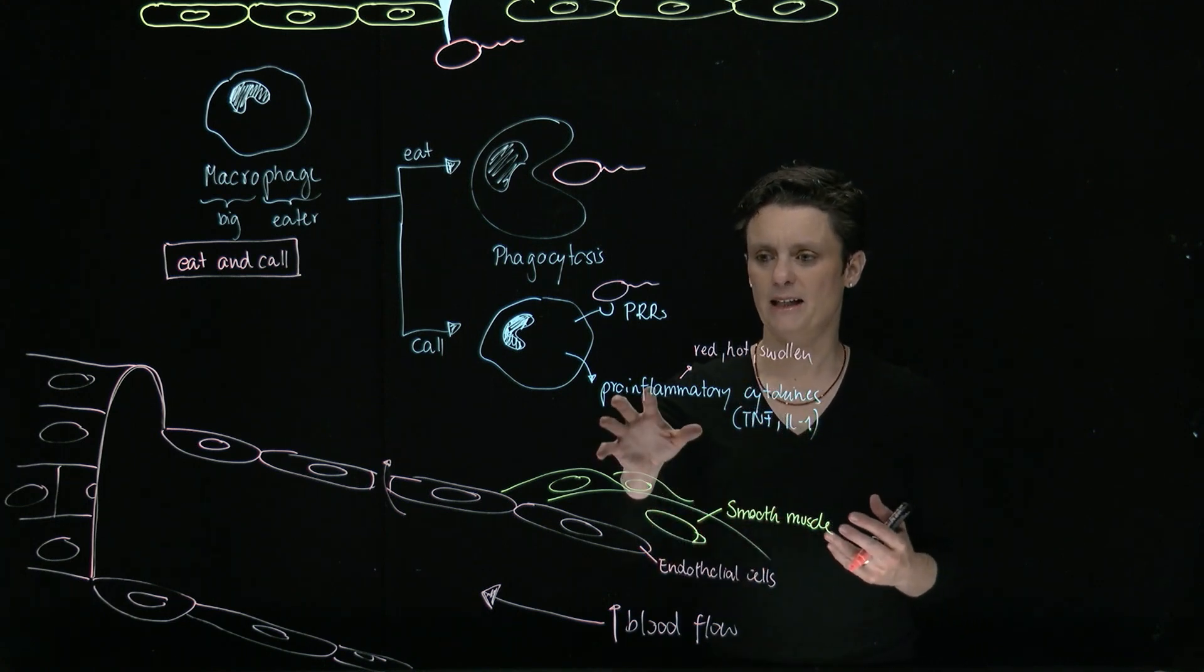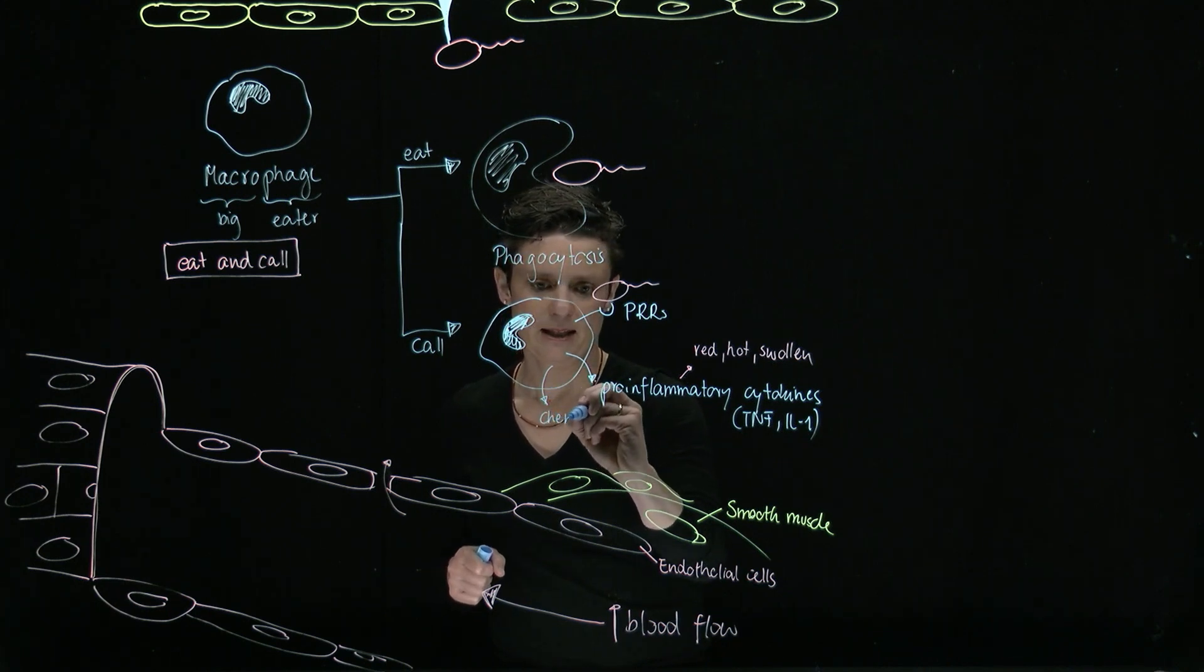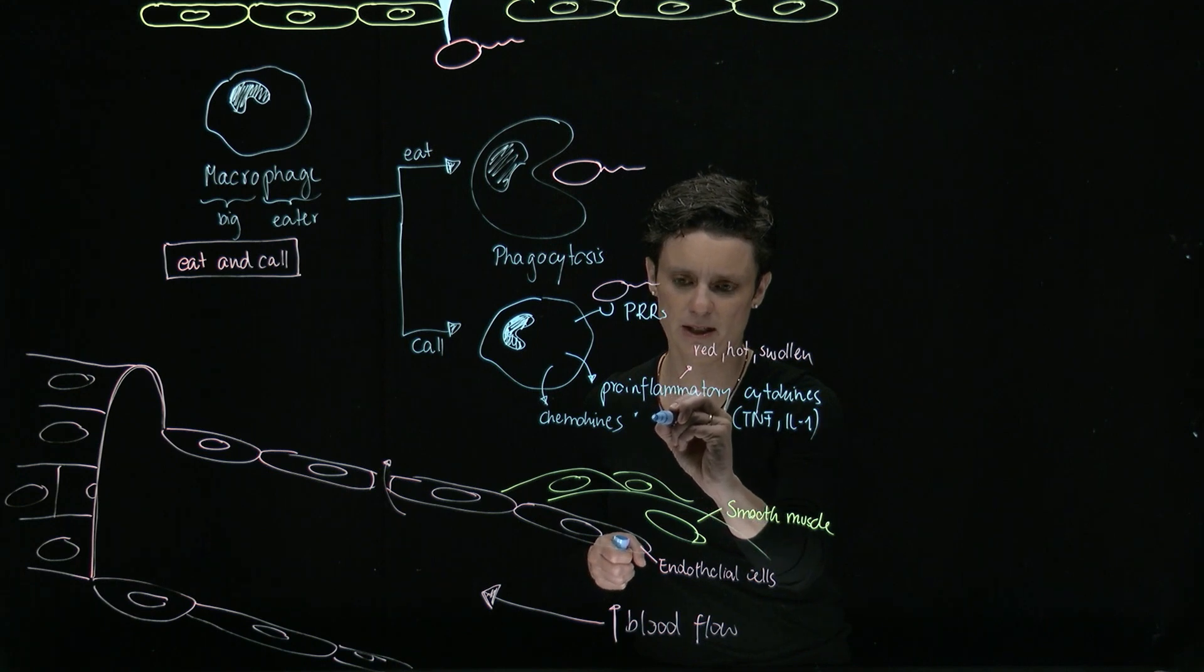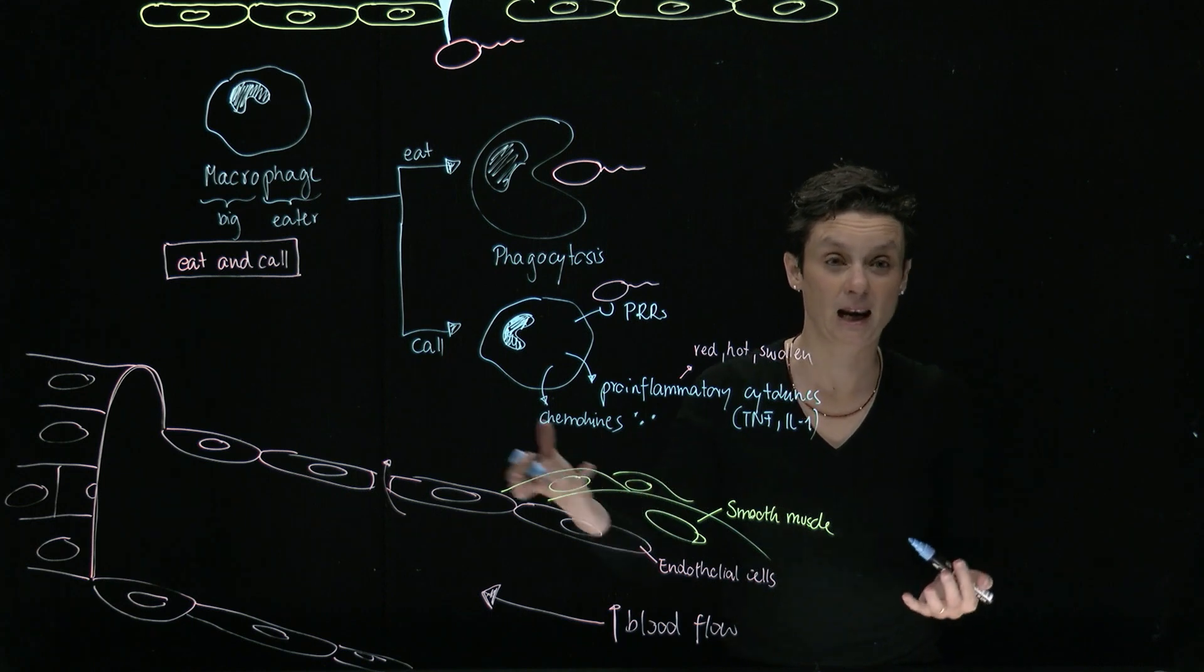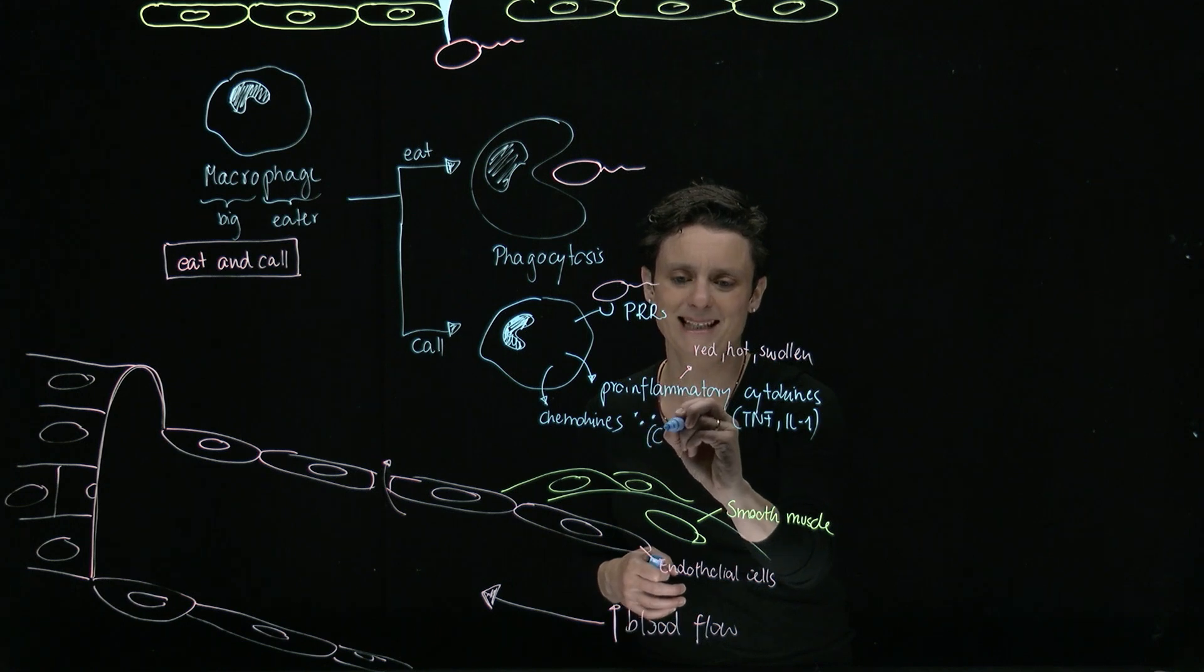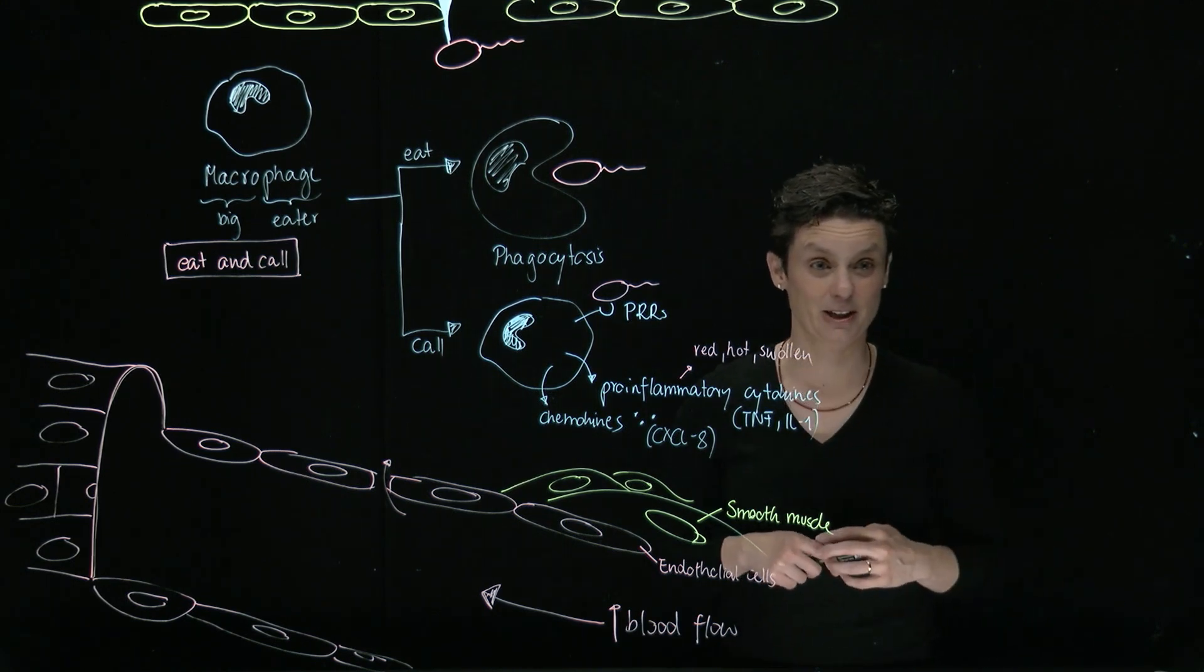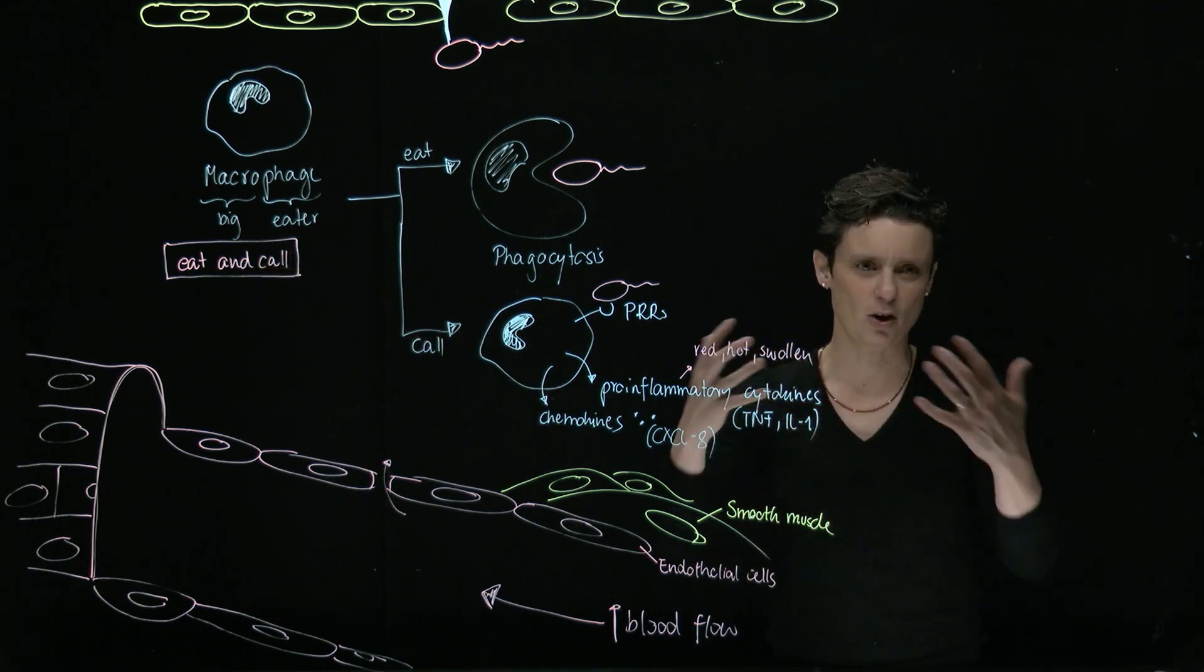Then what else is going to happen? The macrophage also is going to make chemokines. And chemokines, I always like to call them little traffic directors for the immune system. Once they are secreted, these are little molecules, it's kind of a little taste for other cells to smell, to see where they're supposed to go. The macrophage actually will release CXCL8 in particular. And this is a chemokine that is very important to attract neutrophils. That's what's also going to help us because I said already before, eat and call. It's going to call for help.